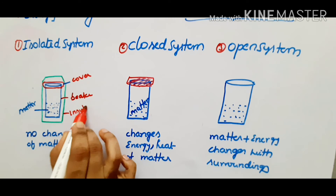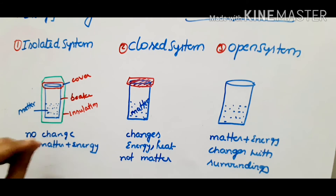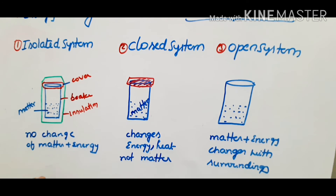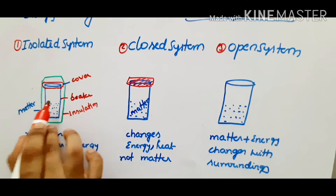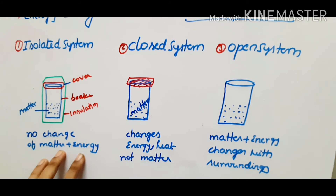Here is insulation — the material is insulated with a cover and lid, so the surroundings are insulated. For example, we have a thermos flask. In a thermos flask, the surroundings are insulated. There is no change in matter and energy between the system and surroundings. That is what an isolated system is — one in which there is no change of matter and no change of energy with surroundings.